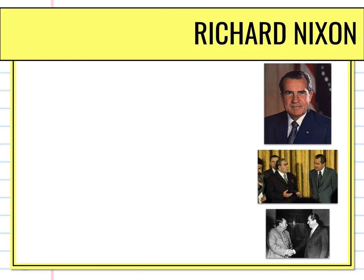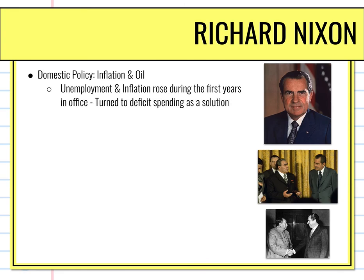The primary president of the 1970s was Richard Nixon. Once elected, he focused his domestic policy on inflation and the oil crisis. Unemployment and inflation had been on the rise during his first few years in office. To try and fix this, he turned to a policy known as deficit spending — an expansionary fiscal policy where the government would spend money on different programs in order to try and kick the unemployment crisis and the inflation problem.